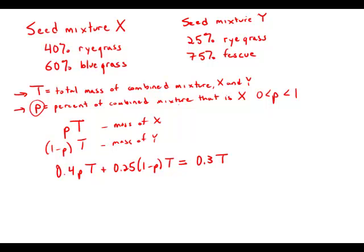Well, as promised, all the T's cancel. And we get an equation we can solve for P. We get 0.4P plus 0.25 minus 0.25P equals 0.3. I'm going to subtract 0.25 from both sides.